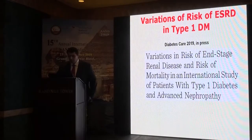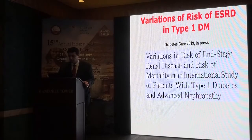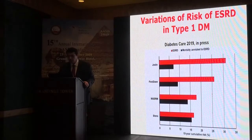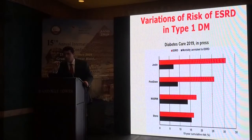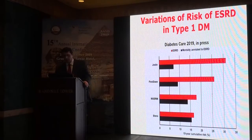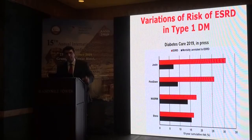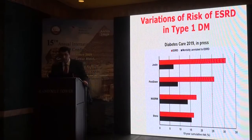Regarding epidemiology, presentation, and trends: a study published in Diabetes Care 2019 examined variations in risk of end-stage kidney disease and risk of mortality in an international study of patients with type 1 diabetes and advanced nephropathy. They found that mortality without end-stage kidney disease is minor, while when end-stage kidney disease is present, mortality is markedly increased.